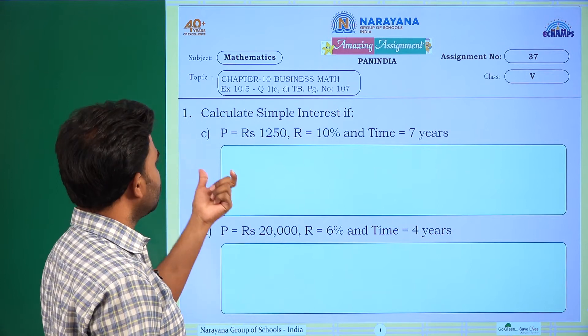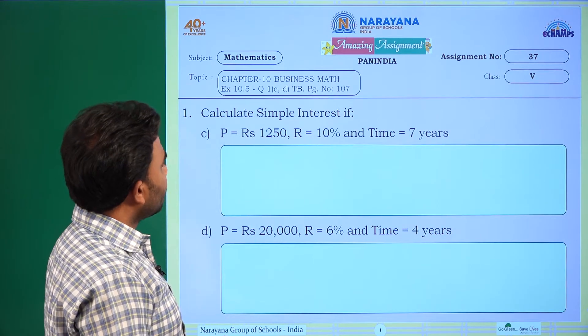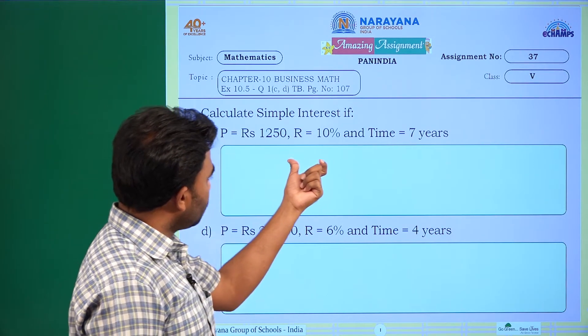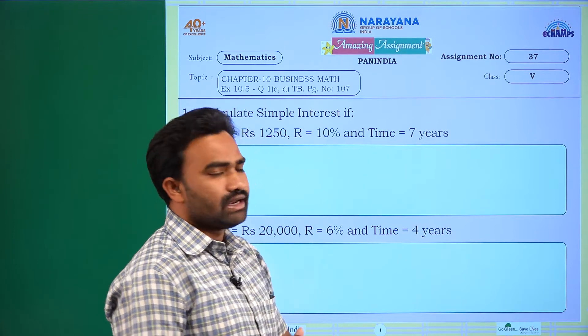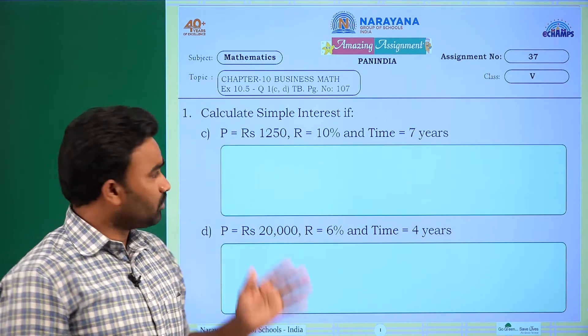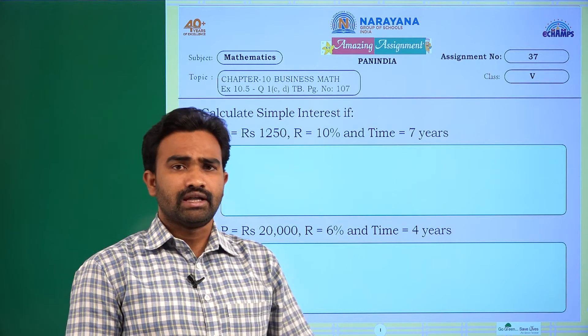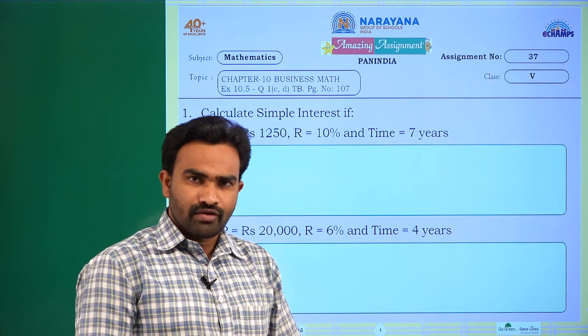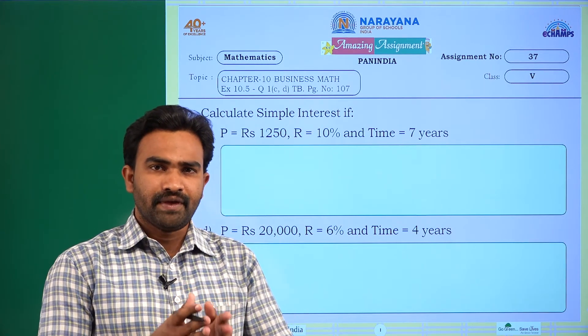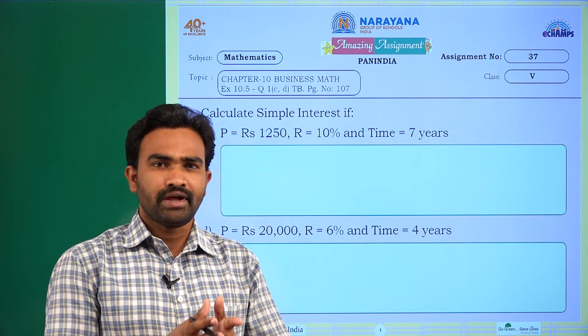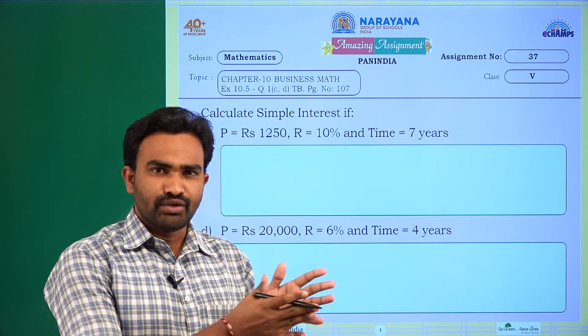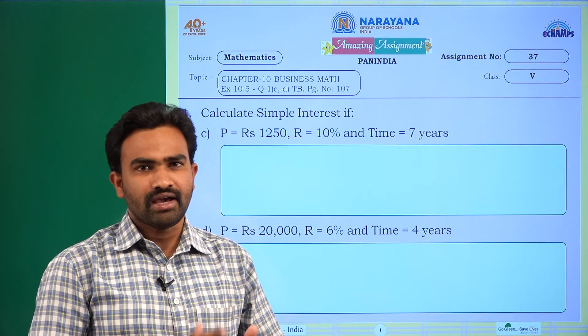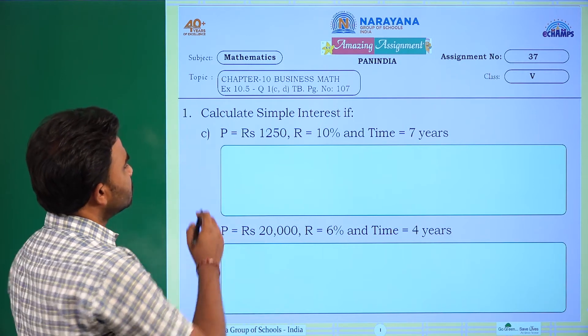See here, how to calculate the simple interest? We know that for simple interest, when principal, rate of interest, and time are given, there will be a formula: that is P×T×R, that means principal into time into rate of interest by 100. Now what is the principle here?